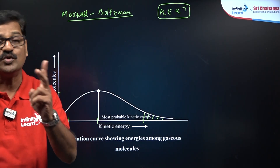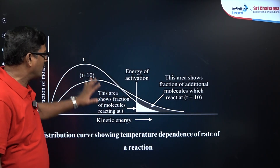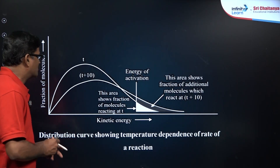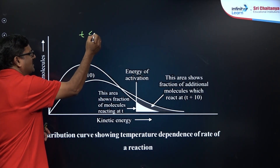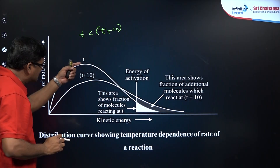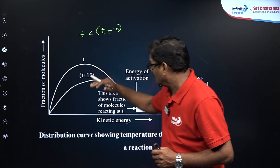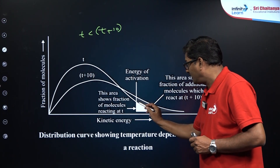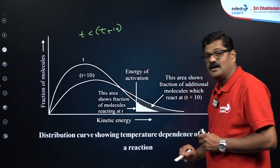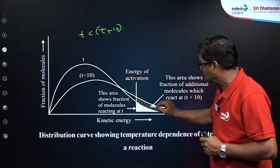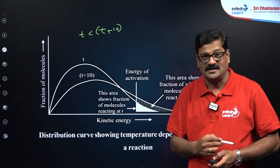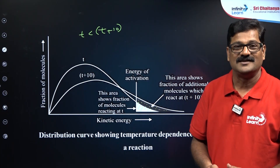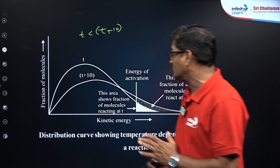If you apply this graph at two temperatures T1 and T2 — say T and T + 10°C — as temperature increases, the graph becomes flatter and the fraction of molecules with high kinetic energy increases. This means the number of effective collisions — collisions that lead to products — increases, and therefore the rate of reaction increases. This is explained using the Maxwell-Boltzmann molecular distribution curves.